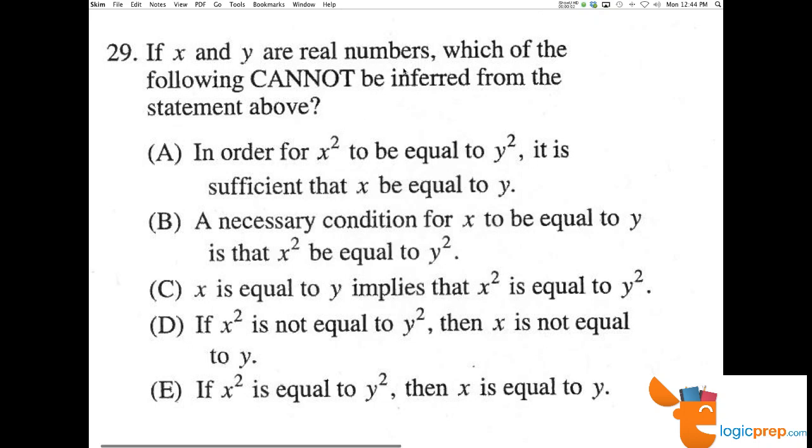Number 29. If x and y are real numbers, so okay, they're not imaginary, which of the following cannot be inferred from the statement above?